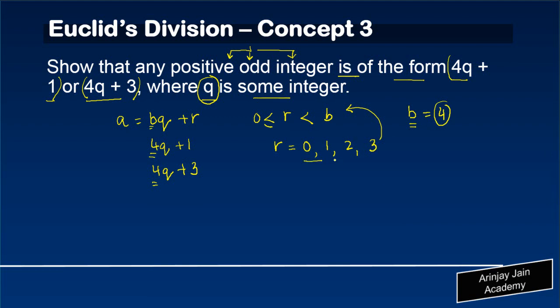Now, if we apply the value of r that we have discussed here in a, what do we get? We get that a could be equal to 4q plus 0, 4q plus 1, 4q plus 2, or 4q plus 3. These are the potential values that a can have.